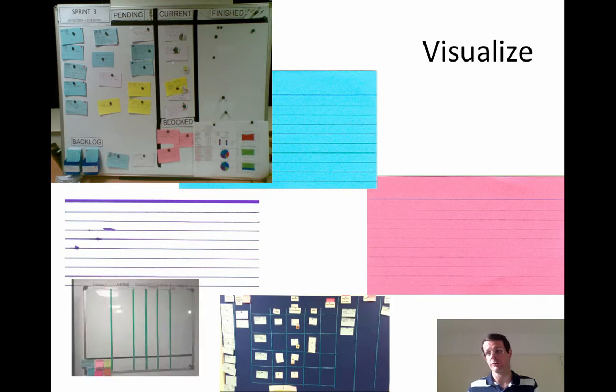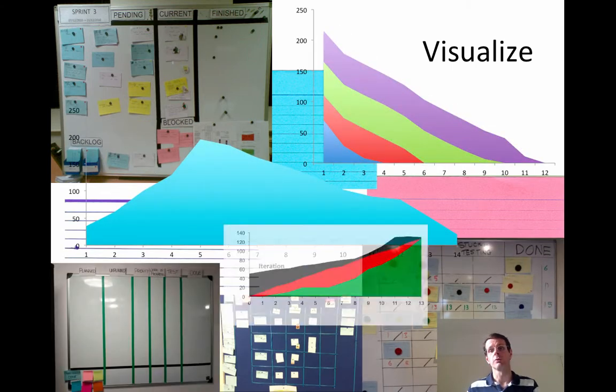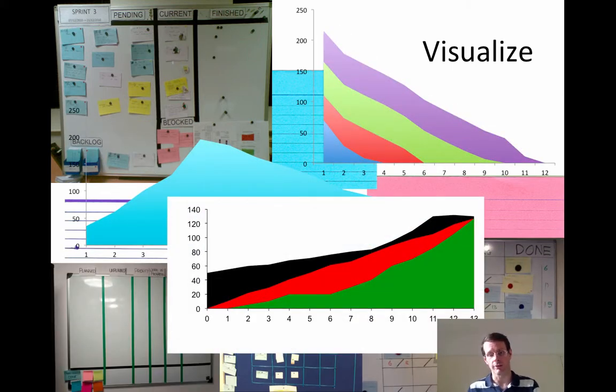Agile has lots of ways in which work is visualized. We want to see the work, we want to understand the work. I've got a few examples here, I'm going to talk you through them. I'm also going to talk about why visualizing your work is important.